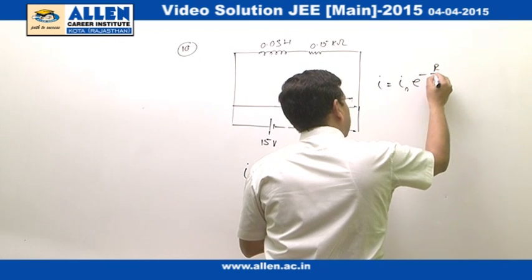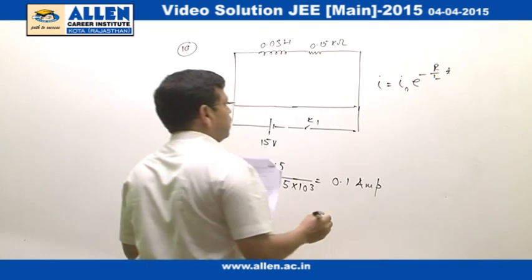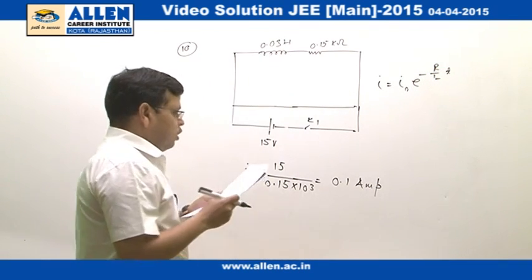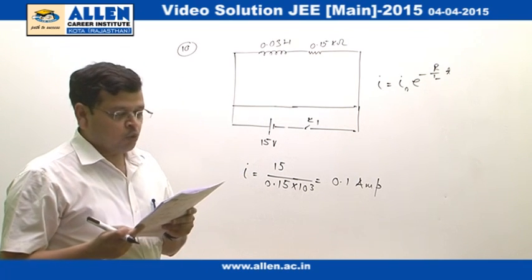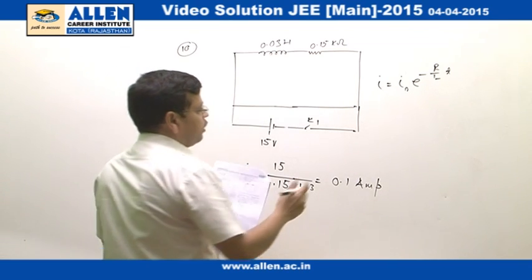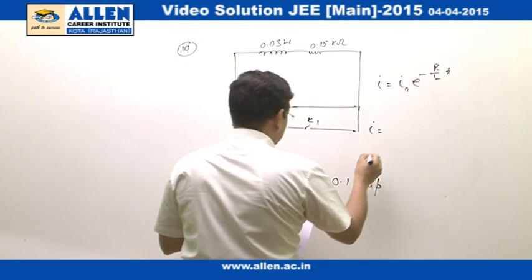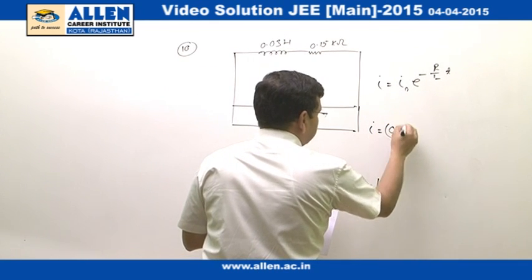So, we have been asked to find out what is the value of the current at 1 millisecond. We will get I equals, in place of I not, we will put the value 0.1.